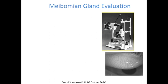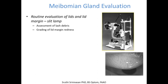When it comes to meibomian gland evaluation, the first step is to do a routine evaluation of lids and lid margins, which can be done with a slit lamp. It starts with looking at the lashes and lid margins, grading the lid margins for redness, and assessing the lashes for debris, collarettes, and lash loss. The Keratograph 5M has an imaging option to capture images of the lids and lid margins so that you can follow patients to find out if there is any lash loss, especially in severe cases of MGD and blepharitis.